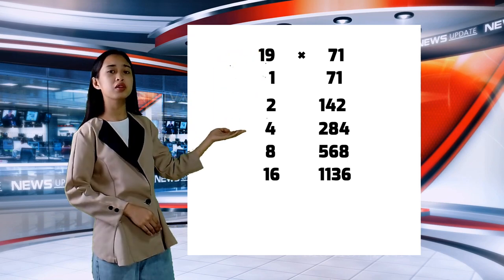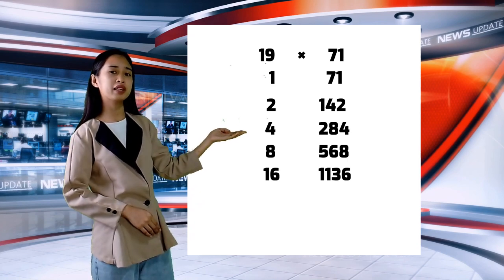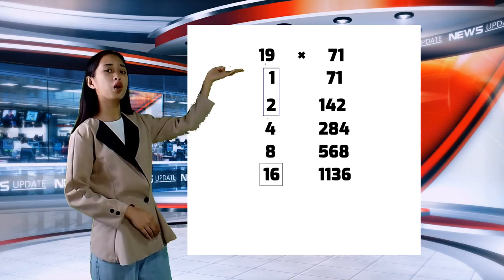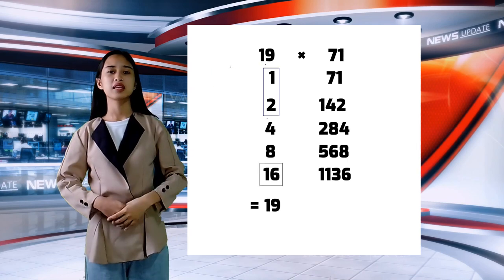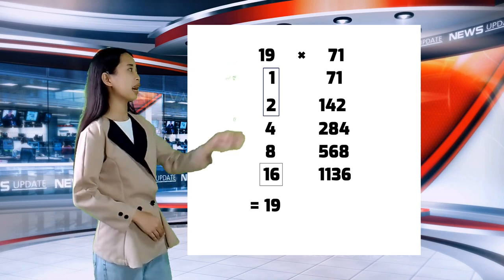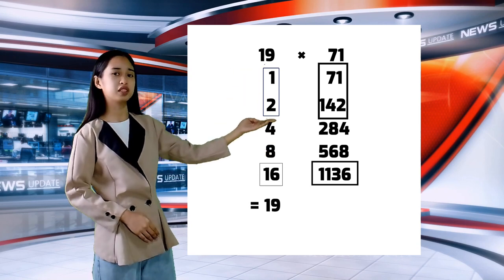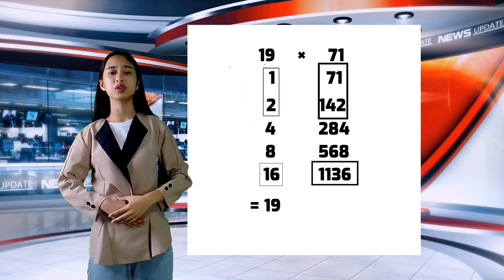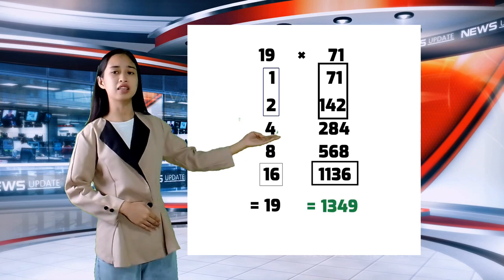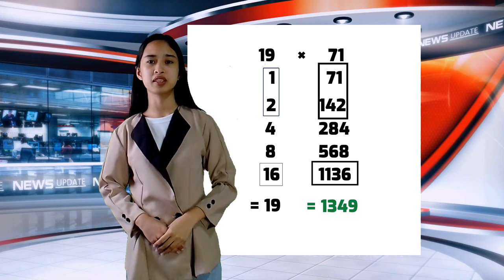Continuing to double, we end at 16 because doubling 16 would exceed our multiplicand of 19. Now we check which numbers combine to give us 19: we have 16, 2, and 1. The corresponding multiplier values are 1,136, 142, and 71. Combining those gives a product of 1,349. And that is all for Typhoon Egyptian Multiplication.